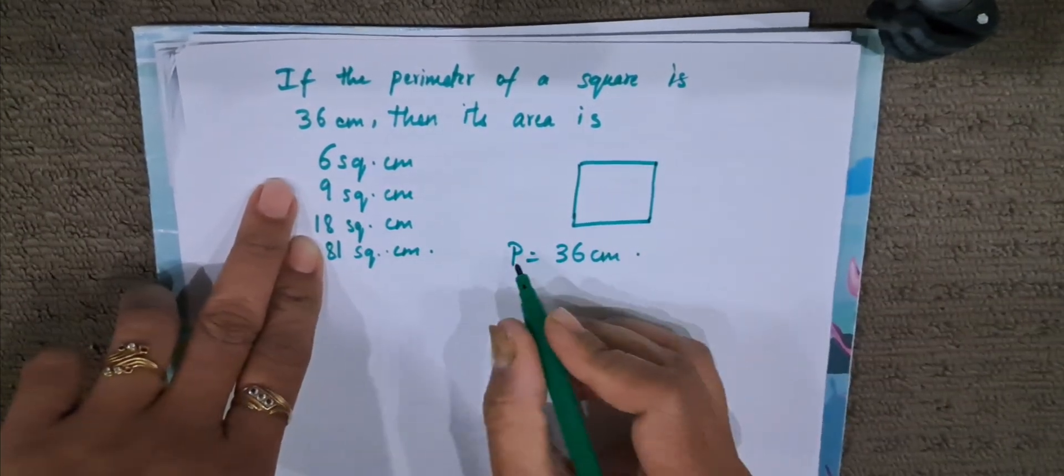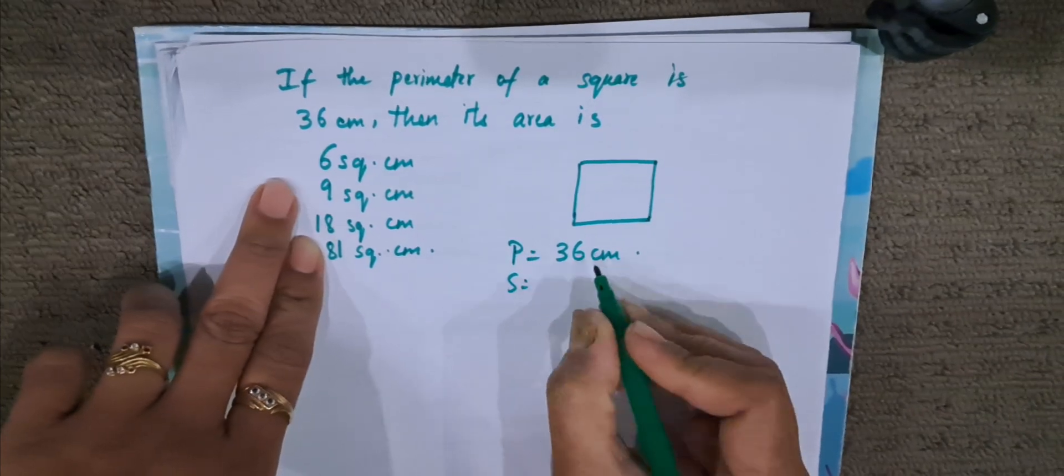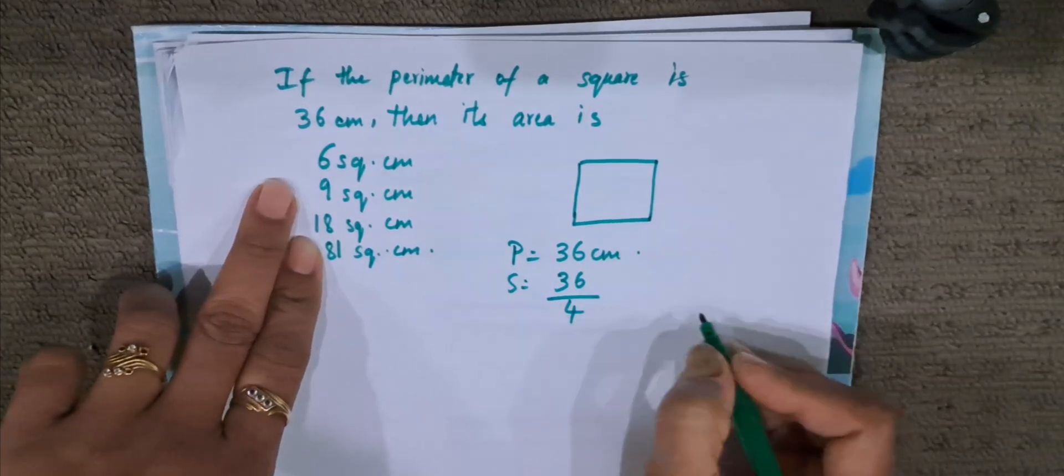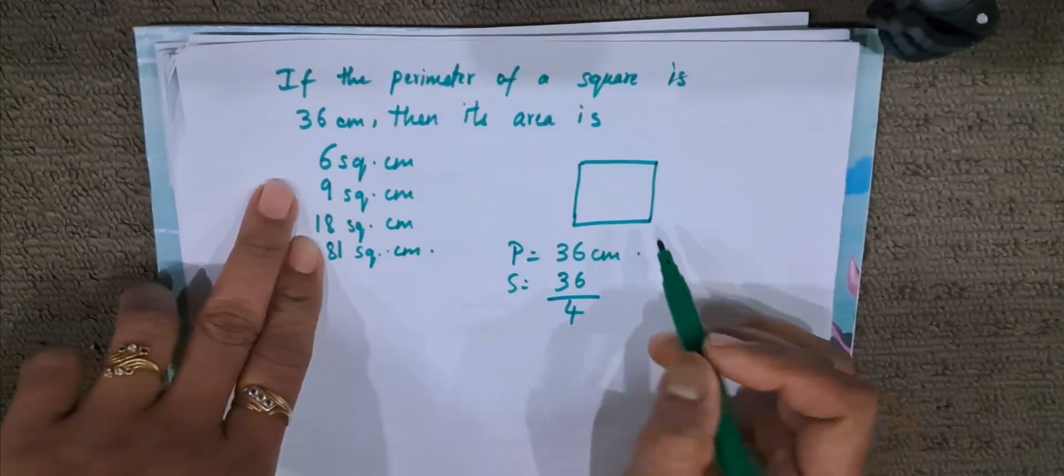Now if perimeter is 36, what will be the side? Side will be 36 divided by 4. Why are we dividing 36 by 4? Because all the 4 sides are equal.